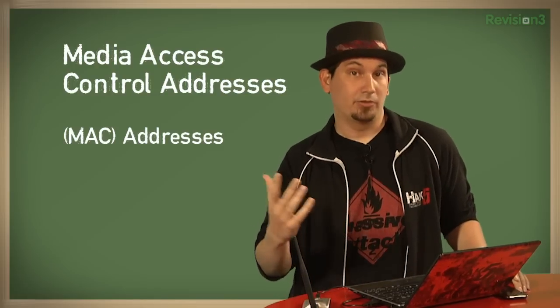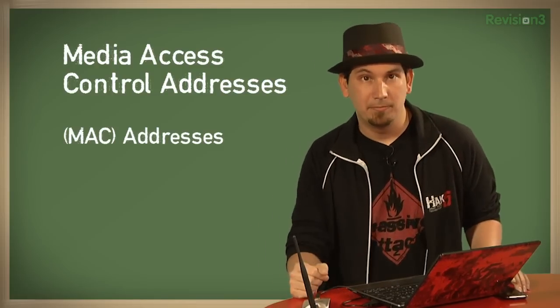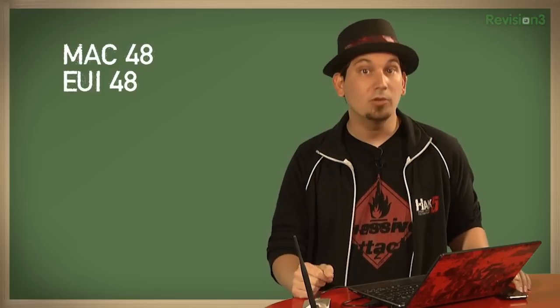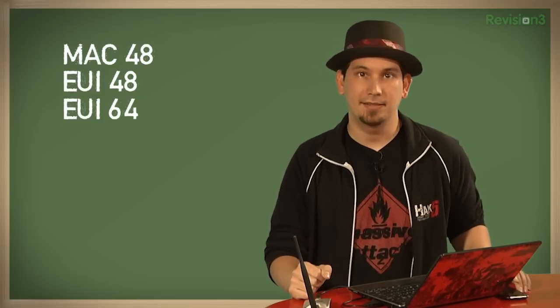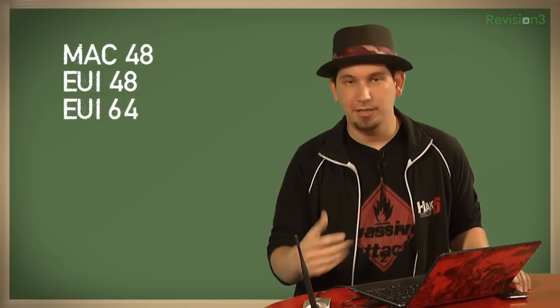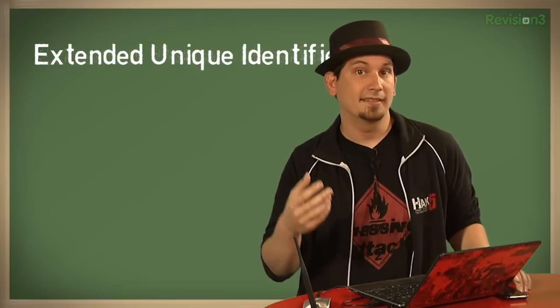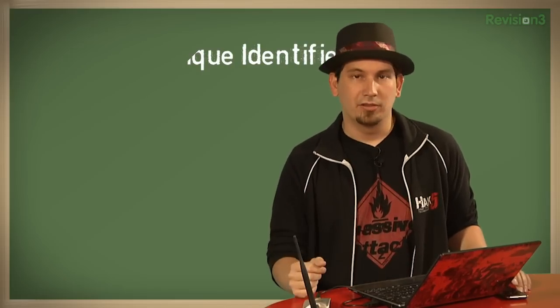MAC addresses come in several schemes — three mainly: MAC 48, EUI 48, and EUI 64. EUI is short for Extended Unique Identifier and covers other devices and software, so not just necessarily network hardware — for example, Firewire.